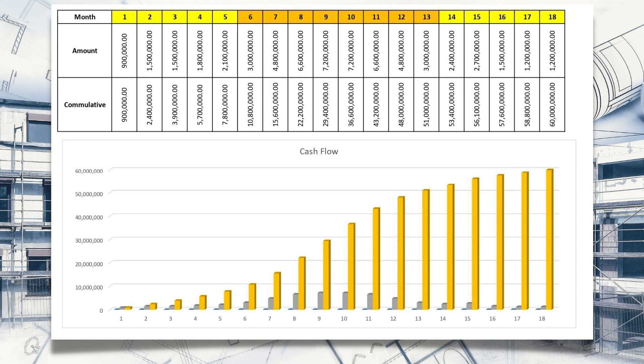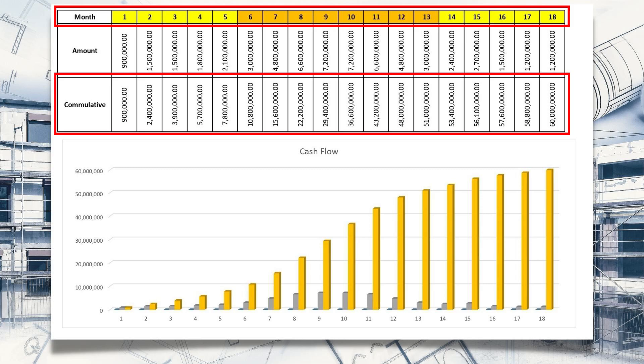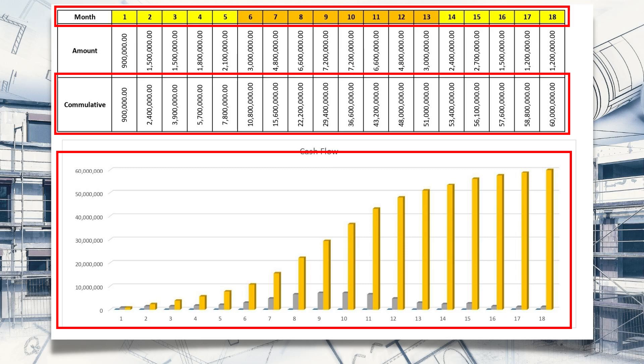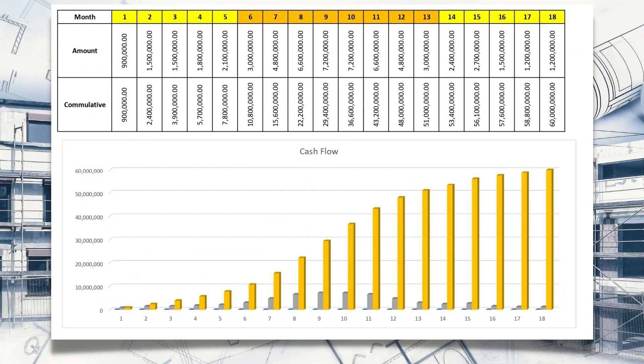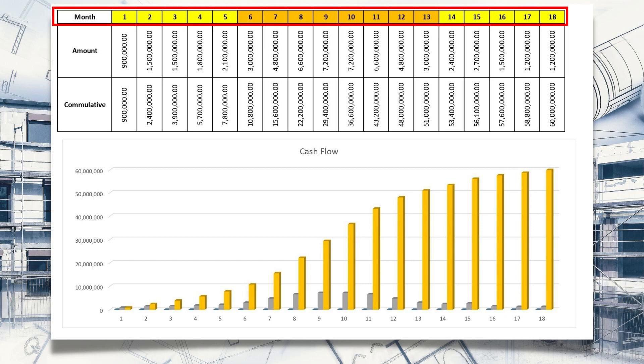When you draw the relationship between the month and the cumulative — as seen by the yellow lines going up from month one through month 18 — you get the S-curve. From month six to month 13 there is a drastic increase in spending, because in that period many activities are happening simultaneously: casting the upper slabs, block work and plaster ongoing below, and finishes and joinery starting on lower floors. That is why the S-curve has its characteristic shape.